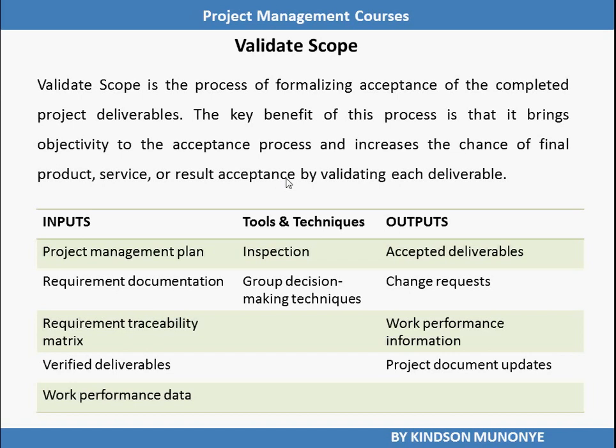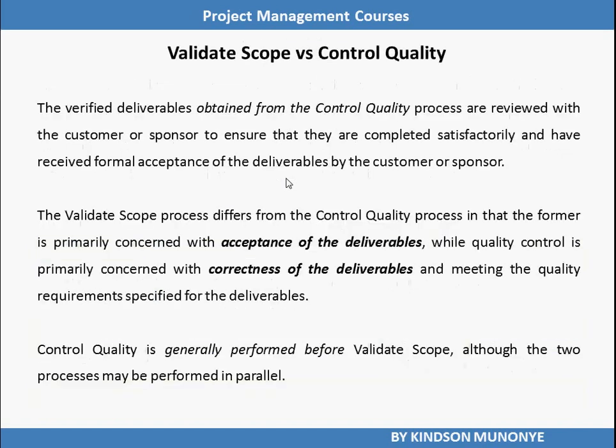Verified Deliverables is an output of the Control Quality process under the Project Quality Management knowledge area. Just know that Verified Deliverables is an output of the Quality Management process. The fifth input is Work Performance Data. There are two tools and techniques: Inspection and Group Decision Making Techniques. The outputs are Accepted Deliverables, Change Requests, Work Performance Information, and Project Document Updates.